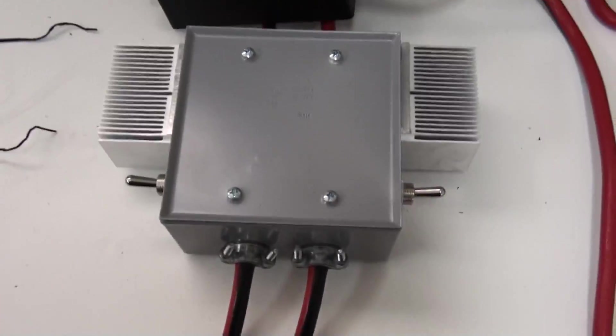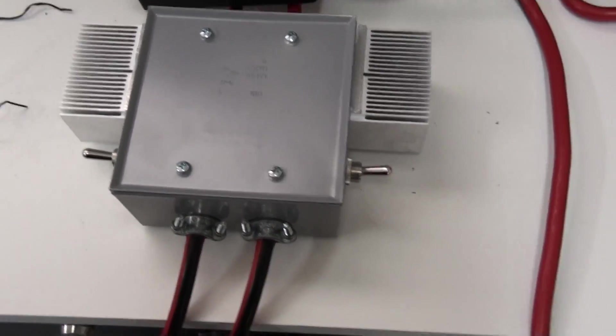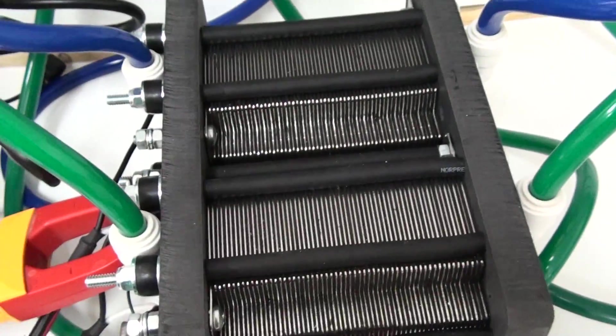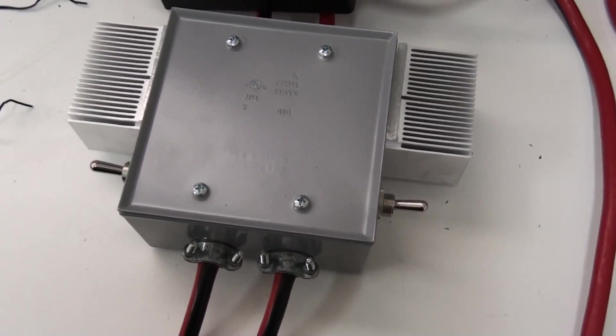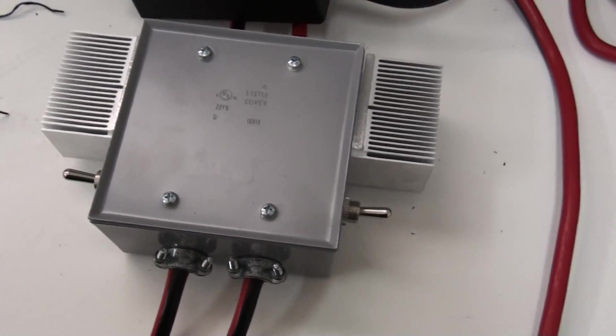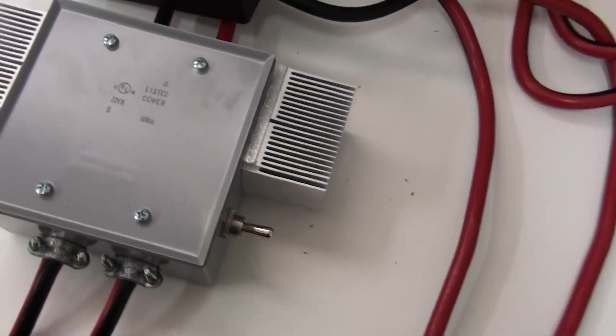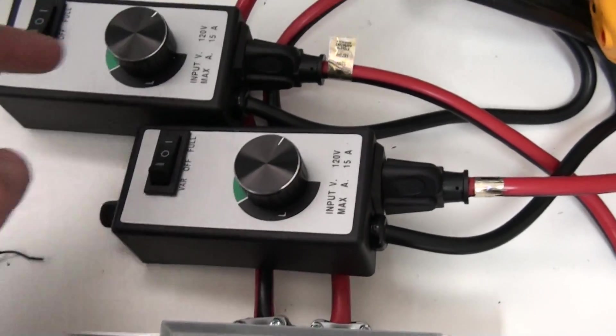And we've got it hooked up to the variable power supply. The cell has two 59 plate stacks in it so we've got two AC to DC converters, one for each side. We've got a switch for each one and then two variable power supplies, one for each side.